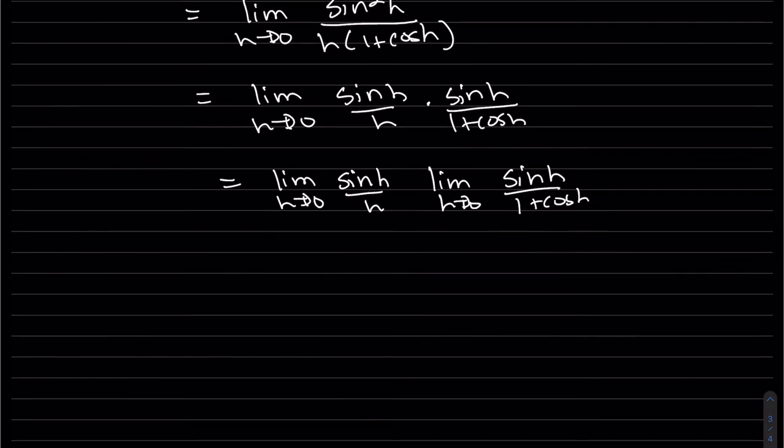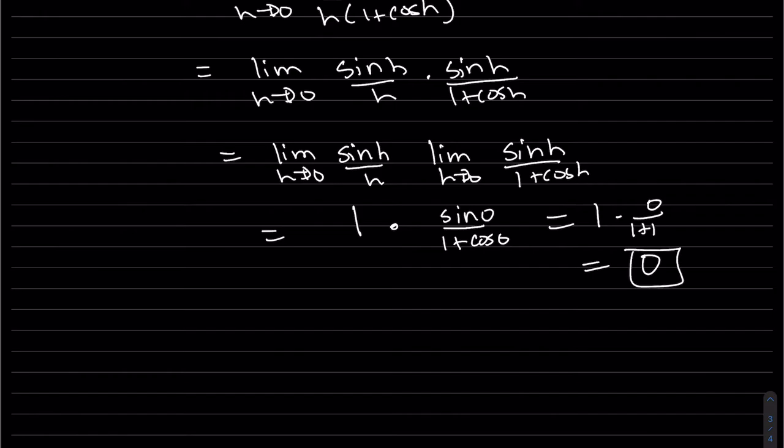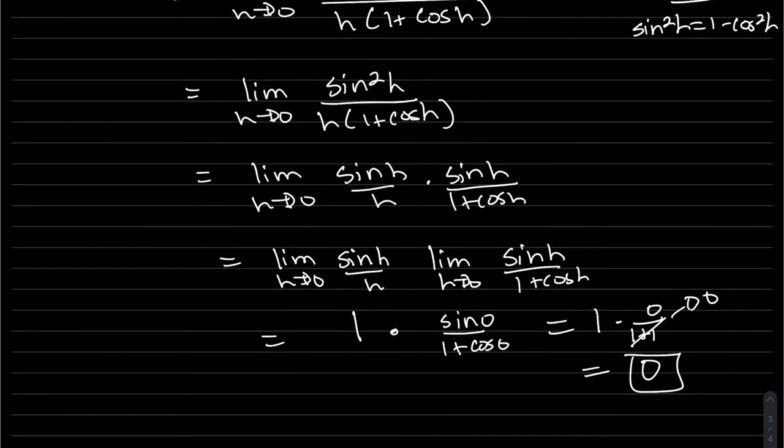So we know this is 1, and this is sin 0 over (1 + cos 0), which is 1 times 0 over 1 plus 1. So that's 0, 1 times 0. So that proves it.